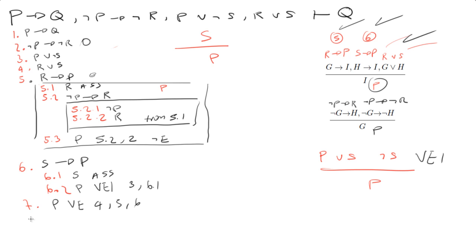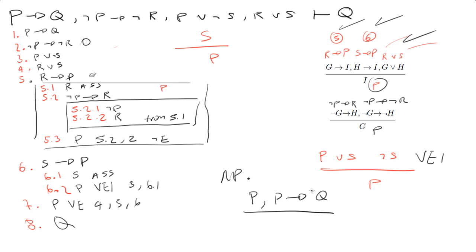Since I've got P out, I can use it in line 8 to get Q. Modus ponens says: if we have P and we have P implies Q, we can deduce Q. You guys should memorize this rule because it is used a lot and it makes life easier. So I can get my Q using modus ponens on line 1 and line 7.